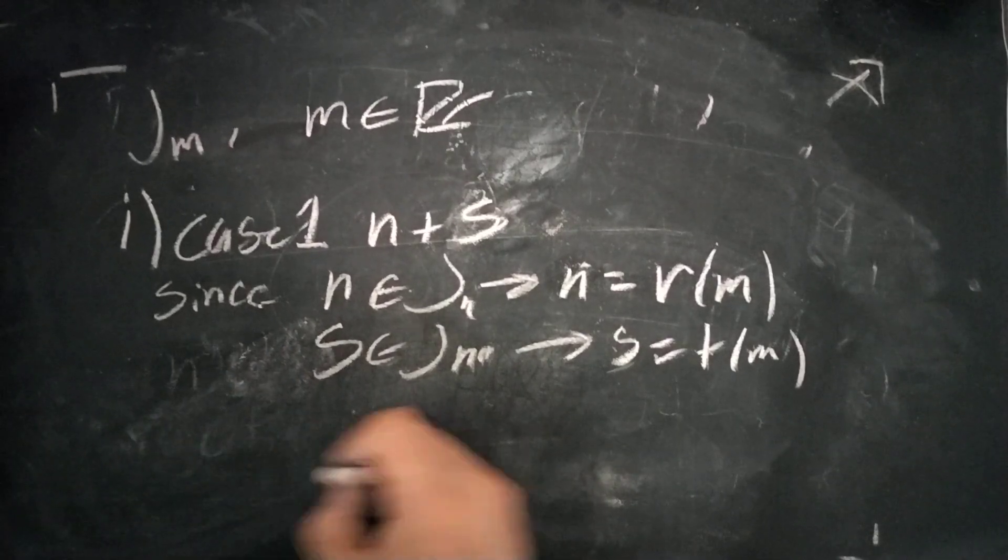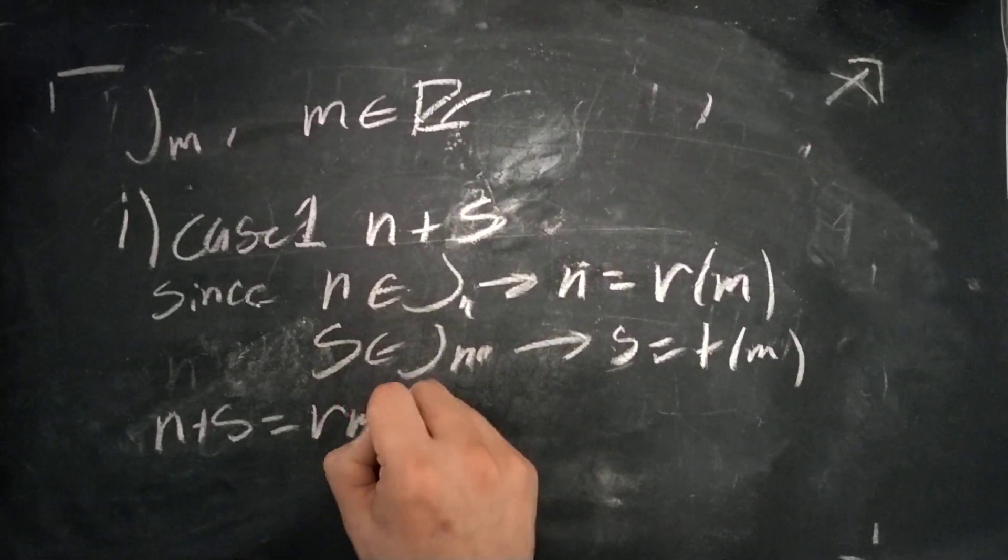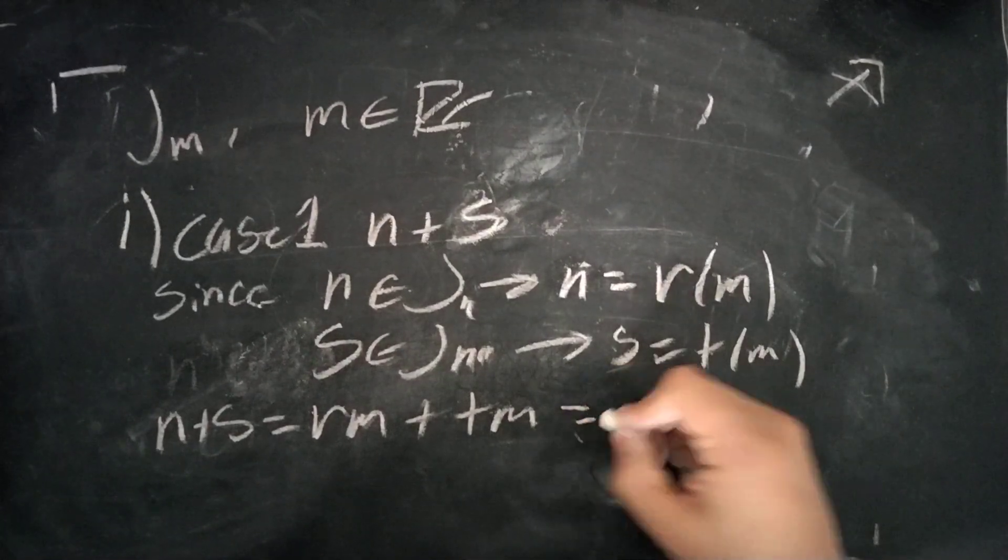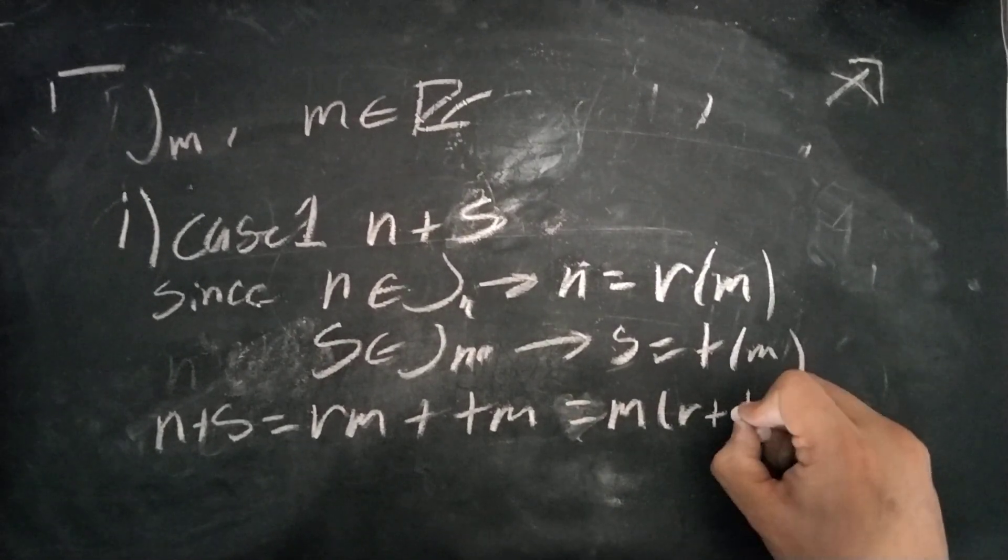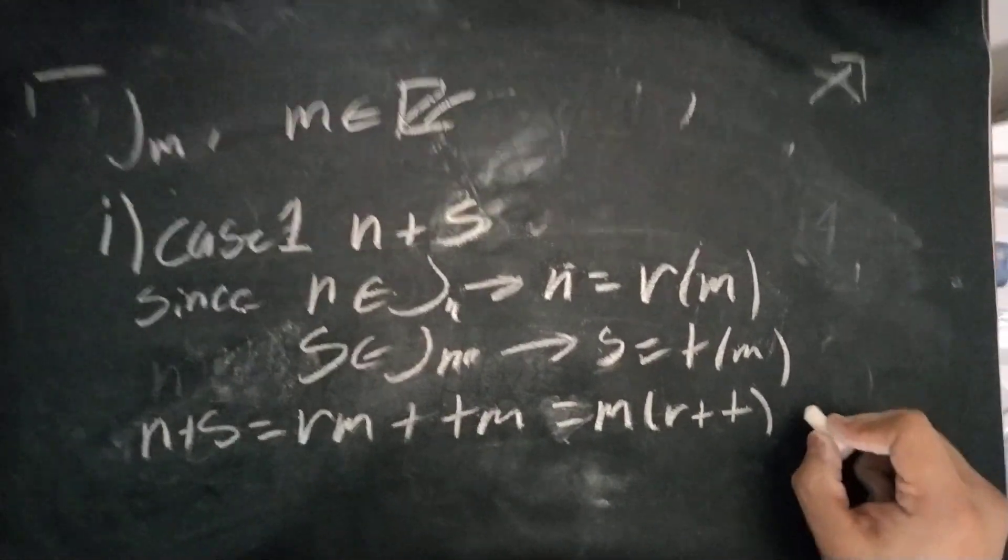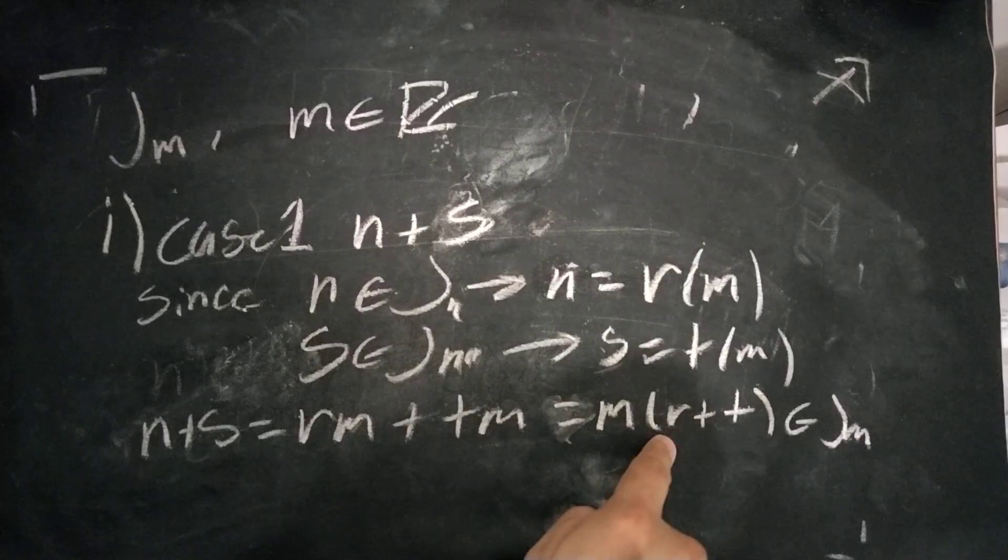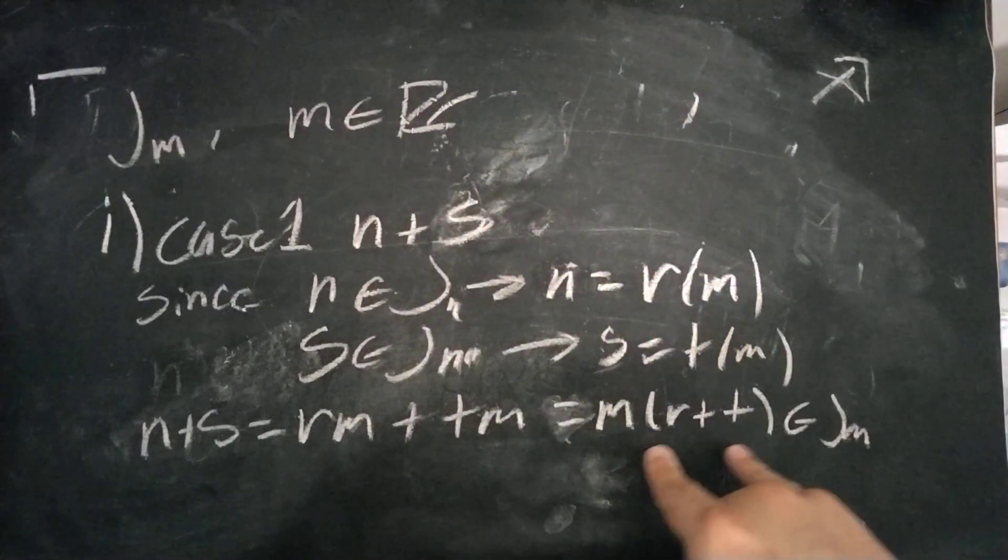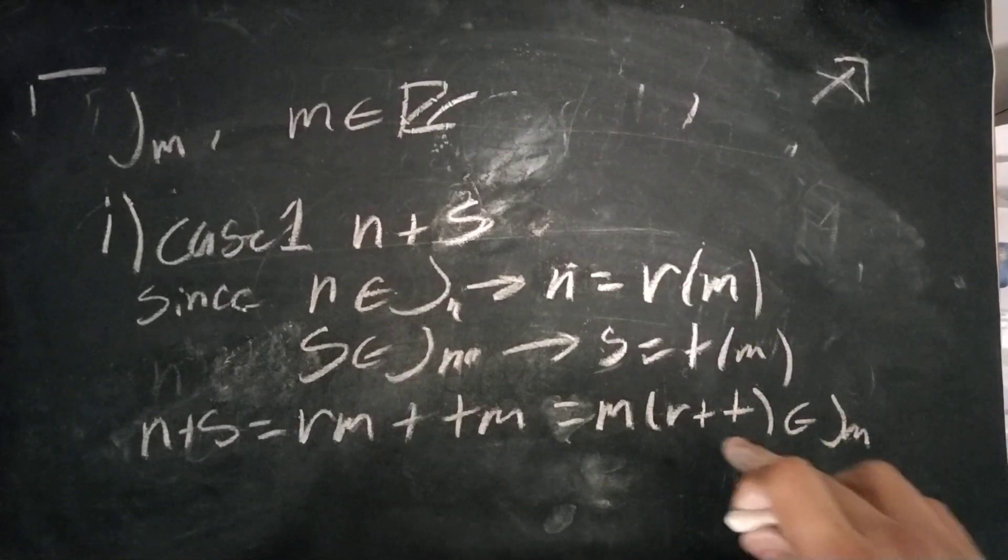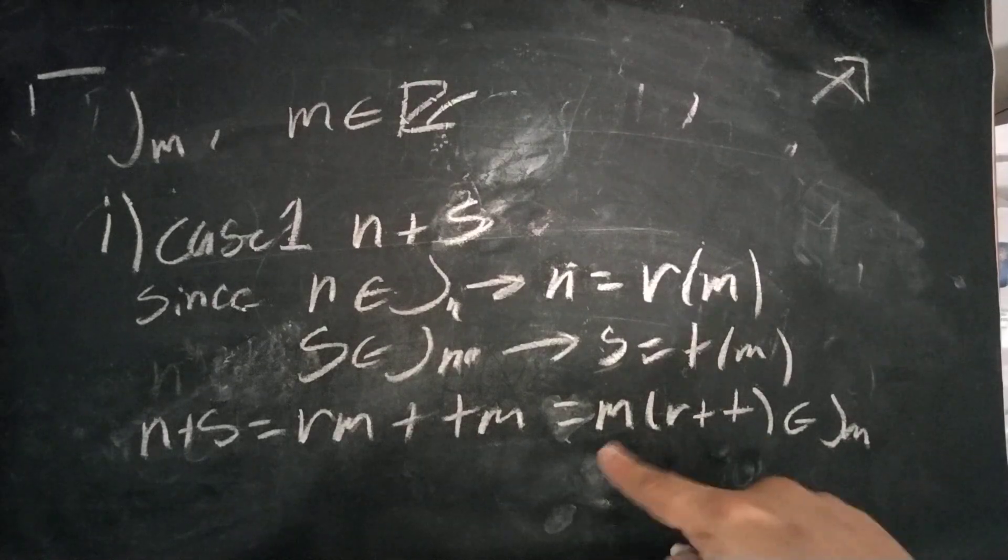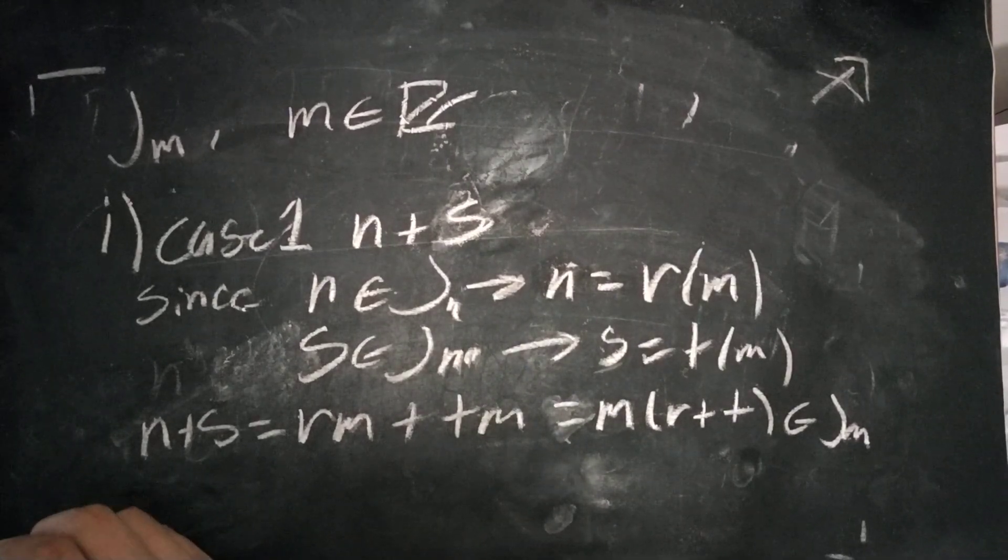So these are two random integers. So we'll say that n plus s is equal to, as we can rewrite both of them as rm plus tm. We can factor out the m. So this is r plus t times m, which in fact is an element of J of m. This is because, since r and t are both integers and the field of integers are closed under scalar and addition, then this is still an integer, and an integer times m is clearly within all the multiples of m. So we've shown that this is the case.